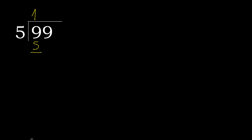9 minus 5 is 4. Next, bring down to get 49. 5 multiplied by 9 is 45 — not greater. 49 minus 45 is 4.